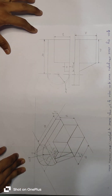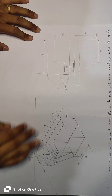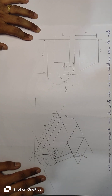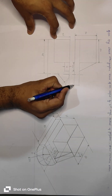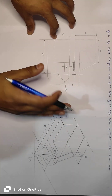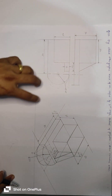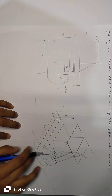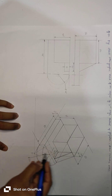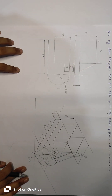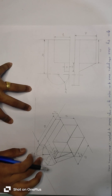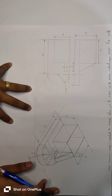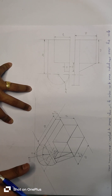Last question, question 10: the figure shows orthographic views of an object by the first angle method of projection — draw the isometric view. The O point is given on the right side of the diagram, so in the answer we draw the diagram on the left side of the Z-axis, originating from the O point. Marks will be decided as per the completion of the correct diagram.